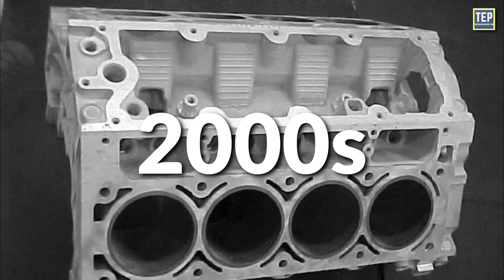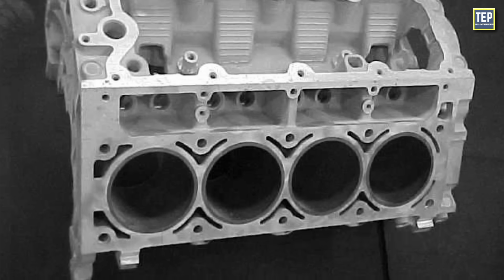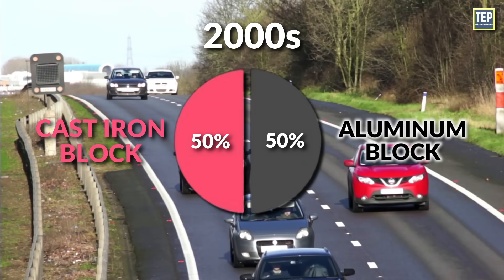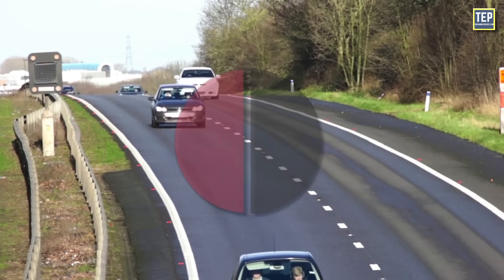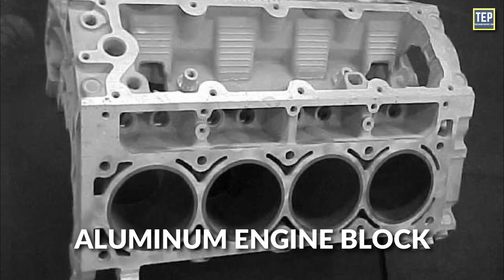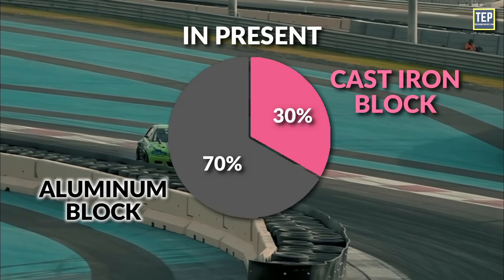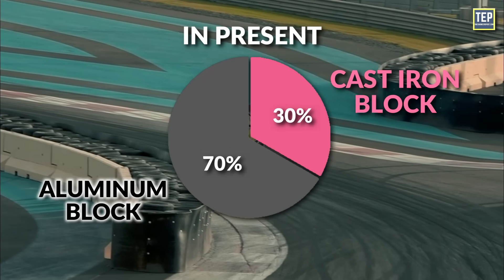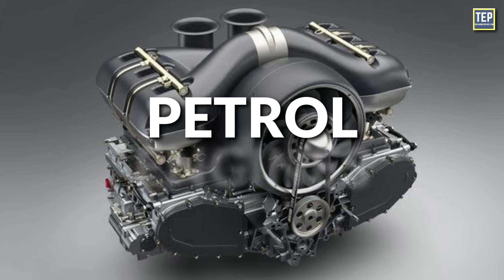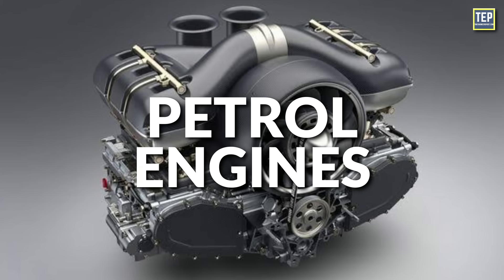By 2000, aluminum engine blocks were present in about half of all newly manufactured internal combustion engines. Nowadays, they dominate the market, being present in more than two-thirds of all newly produced internal combustion engines, particularly in petrol engines, because those are significantly lighter.